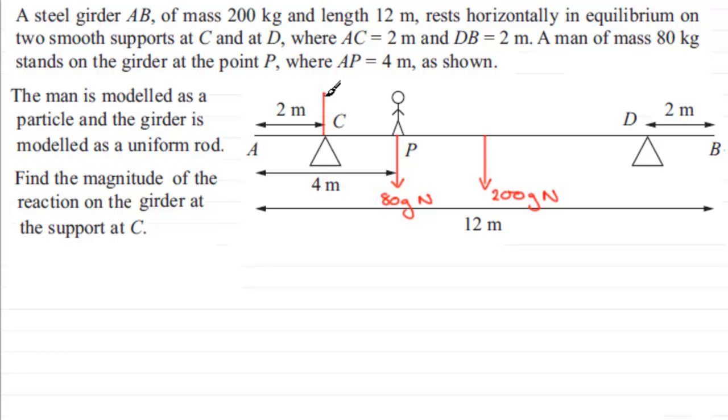We've got the girder resting on these two supports at C and D, so we're going to have two reactions from them. We're going to have one up here and one up from here. Now they're going to be different reactions, so I'm going to call this one the reaction at C, so I'll write a little subscript there RC, and that'll be measured in Newtons. And this one we'll call the reaction at D, and that will be measured in Newtons.